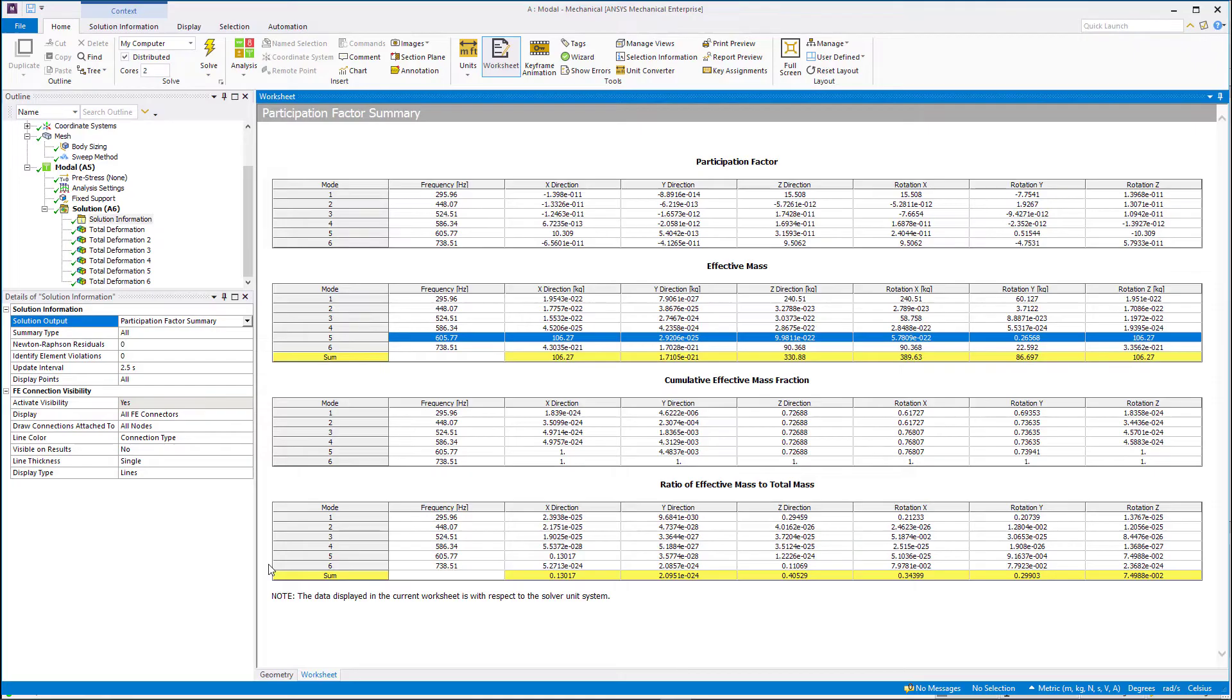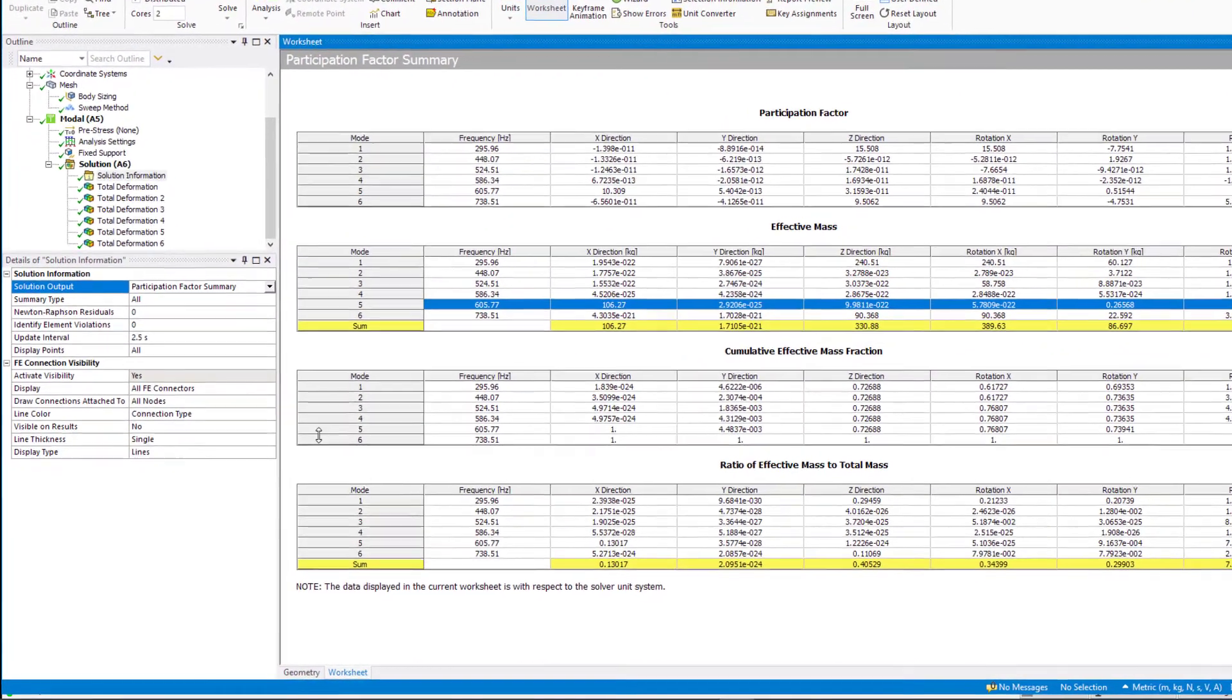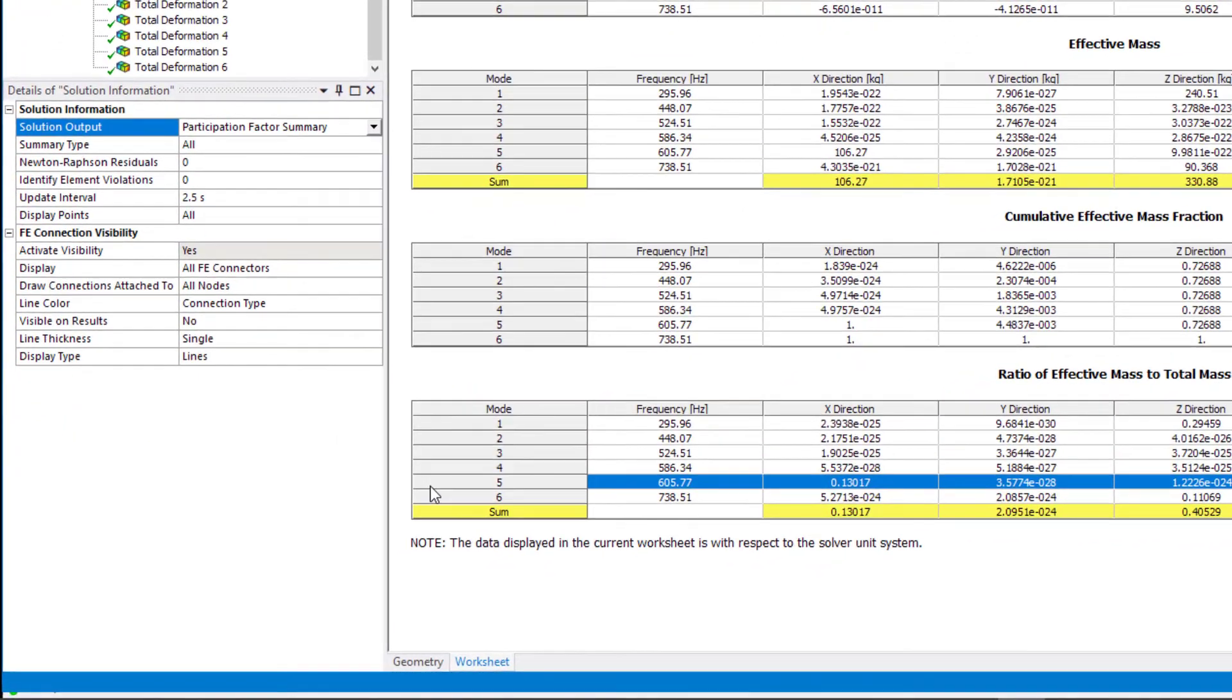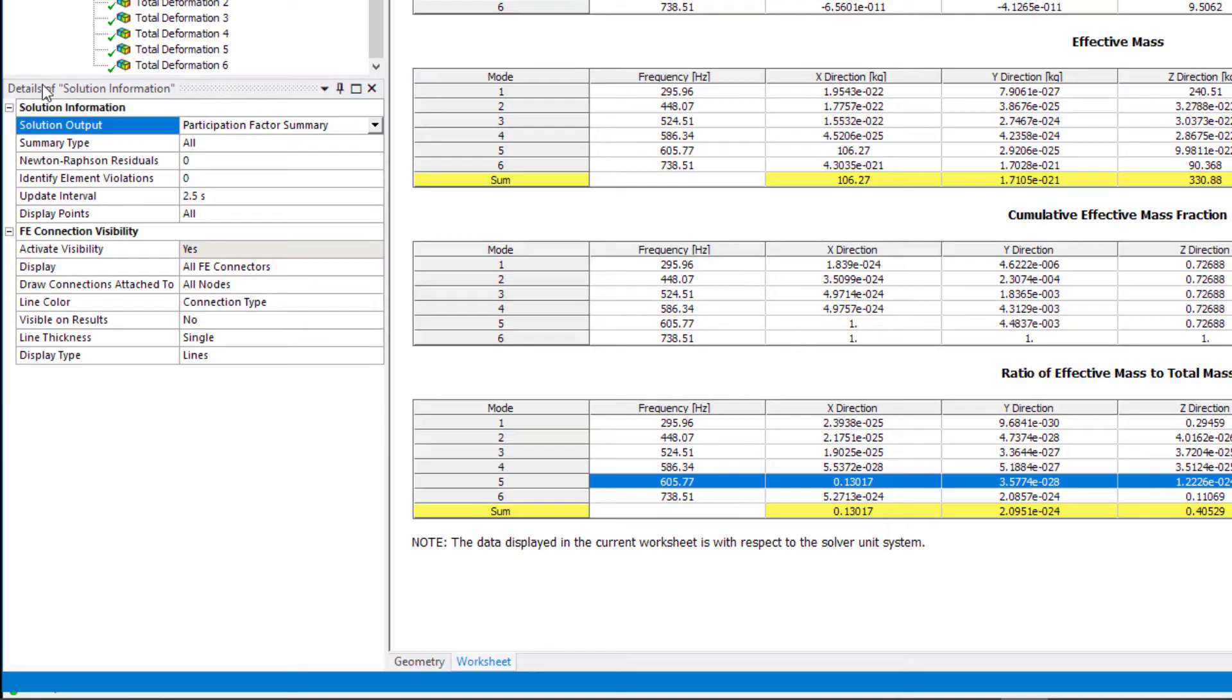In this example, if you look at the ratio of effective mass to total mass, about 13% of overall mass is moving in the direction of mode 5, which is x direction.